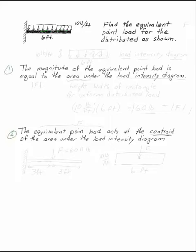The first says that the magnitude of the equivalent point load, this is what we're looking for, the equivalent point load. What is F? I want to know what the magnitude of F is. The magnitude of the equivalent point load is equal to the area under the load intensity diagram.